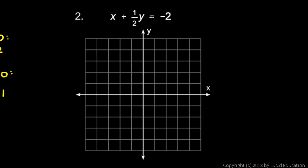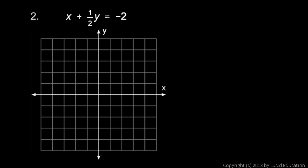And I'm using a ruler, but you could sketch them in by hand, but you do want to try to be neat and try to be accurate. And number two, x plus one-half y is negative 2. We'll take the same approach here.